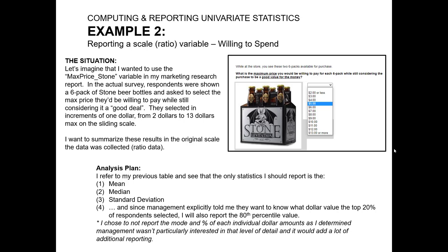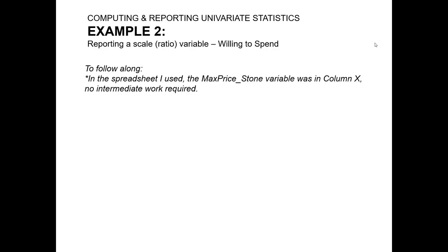So again, through careful thought, I made the decision that I'm not going to include that in part of this reporting and analysis. So to set up our analysis, to follow along, look for the max price stone variable. It's currently in column X for me, but if you've been building and messing with the practice data set, it might be in a different column. So find it.